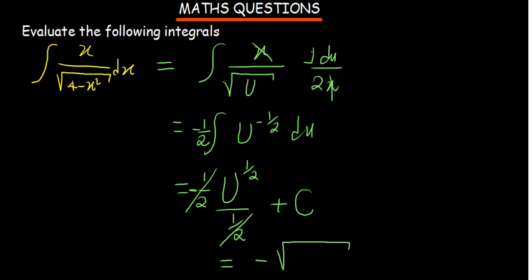But we know that u is 4 minus x squared. Instead of writing half as a power, I've written the root. And then plus a constant c. Are we good? 4 minus x squared, and then plus a constant c.